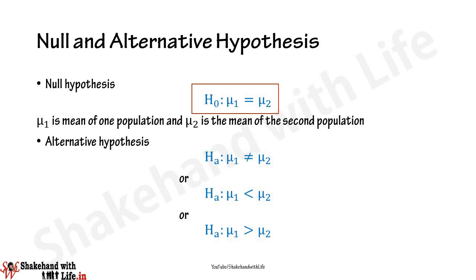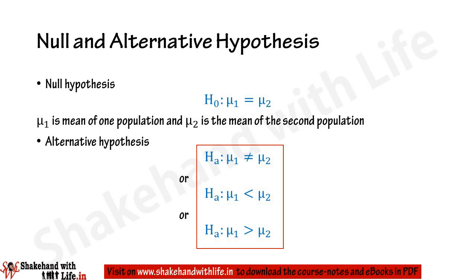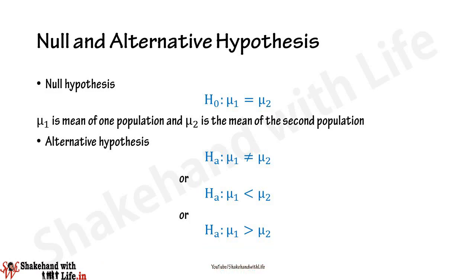Here μ₁ is the mean of one population like the female workers, and μ₂ is the mean of the second population like the male workers. Assuming both populations to be normal, the alternative hypothesis may be of not-equal-to, less-than, or greater-than types. For testing the hypothesis, use the suitable test statistic like Z-statistic or t-statistic accordingly, as we use in hypothesis testing of population means.